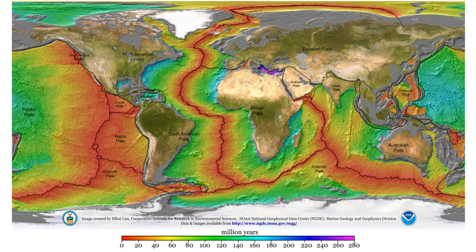The surface gravitational field provides information on the dynamics of tectonic plates. The geopotential surface called the geoid is one definition of the shape of the Earth. The geoid would be the global mean sea level if the oceans were in equilibrium and could be extended through the continents, such as with very narrow canals.